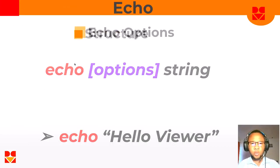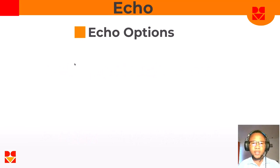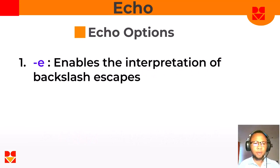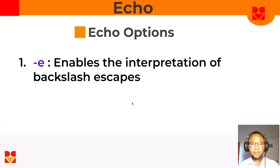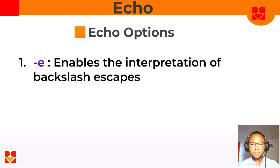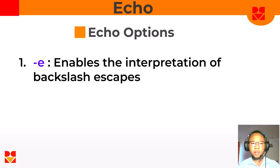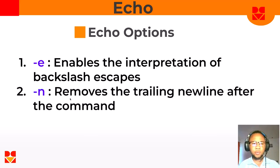Let's look at some echo options. We have option -e. This option enables the interpretation of backslashes or escape sequences. One way to look at it is that it extends the capability of echo to accept some extra features — backslash escapes — that we'll look at very soon.